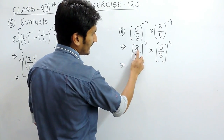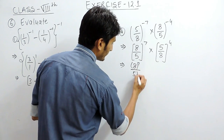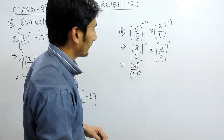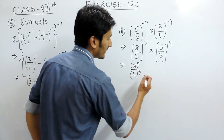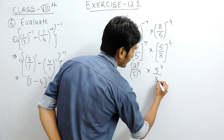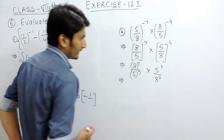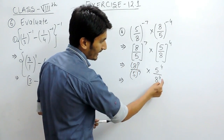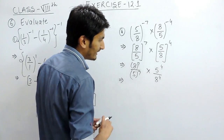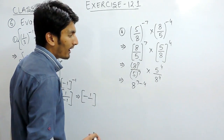Now it is 8 raise to power 7 upon 5 raise to power 7, because the power should be with both the numbers — with the denominator as well as the numerator. Similarly here also it should be 5 raise to power 4 and 8 raise to power 4. Here we have 8 raise to power 7 and 8 raise to power 4 dividing each other, and because the bases are same, we can subtract the powers.